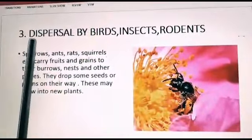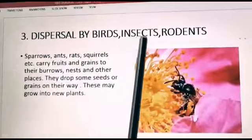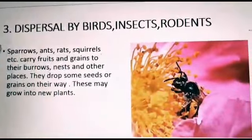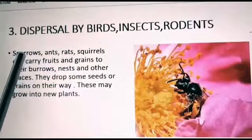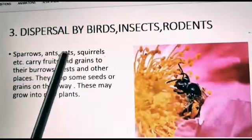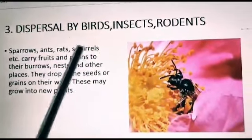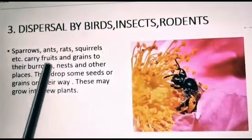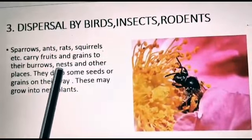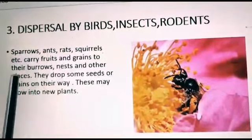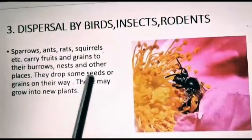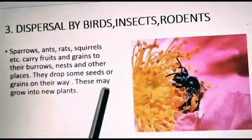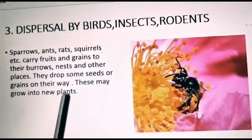Now we will discuss dispersion by birds, insects, and rodents. Sparrows, ants, rats, squirrels, etc. carry fruits and grains to their burrows, nests and other places. They drop some seeds or grains on their way, and these may grow into new plants.